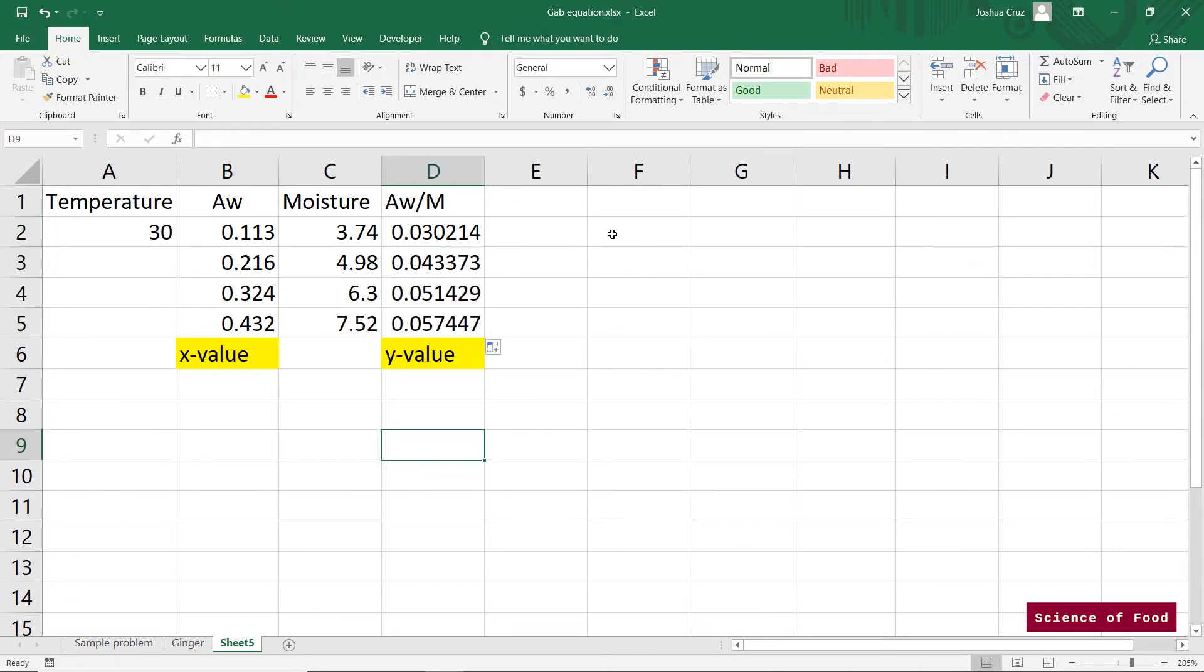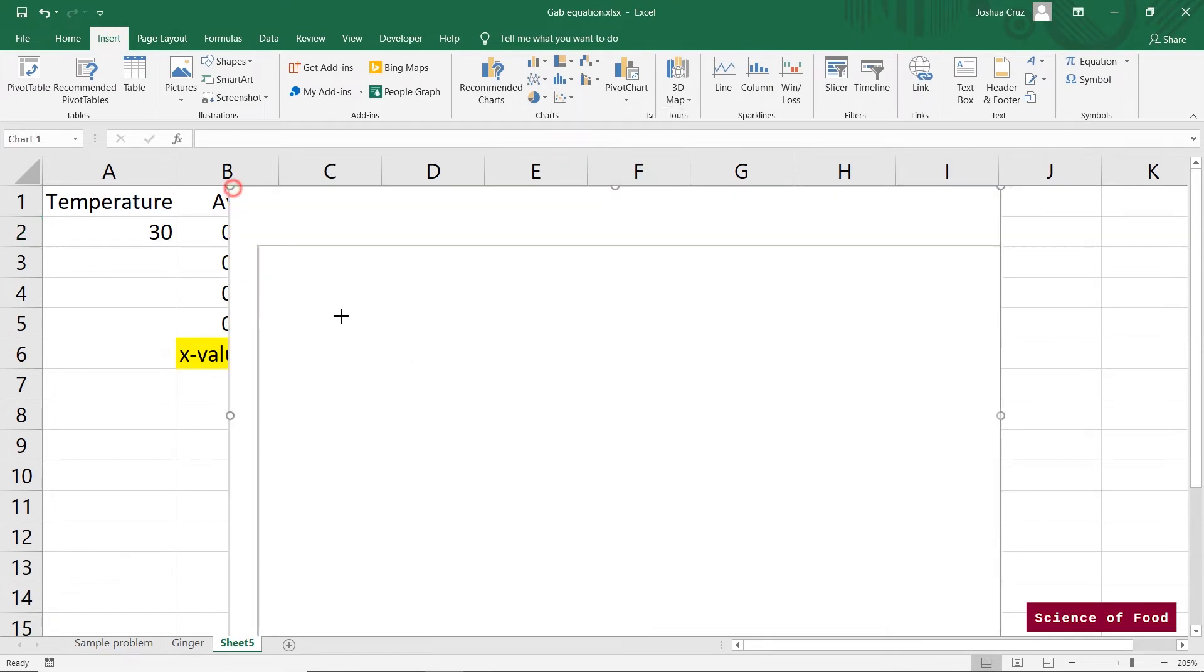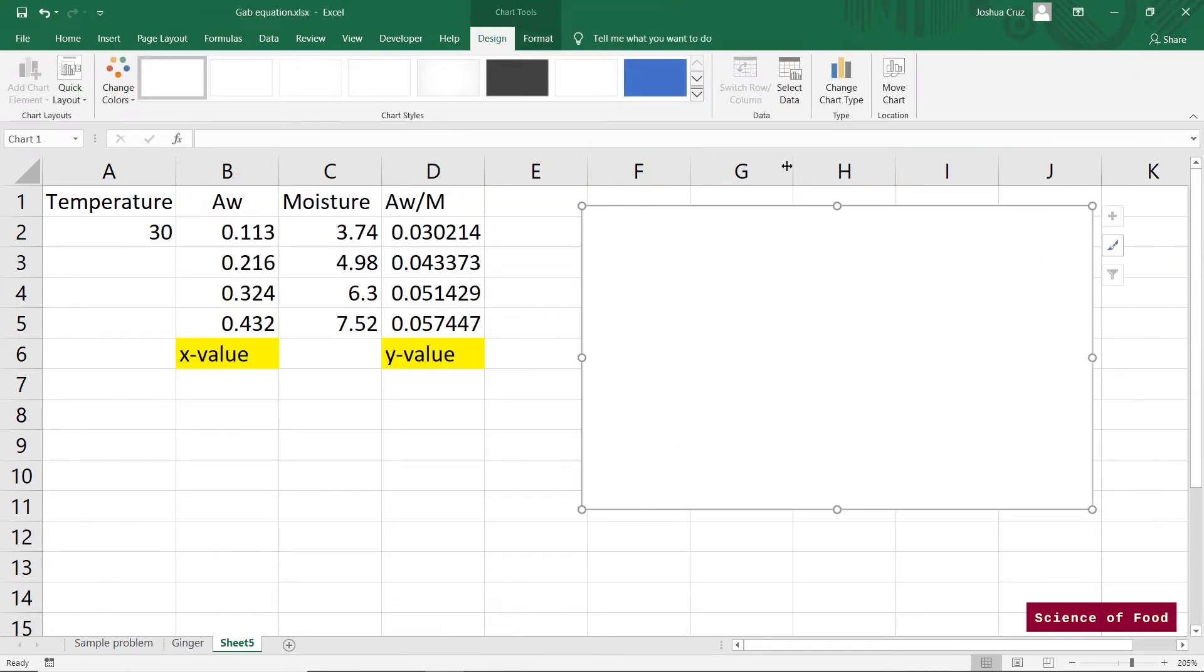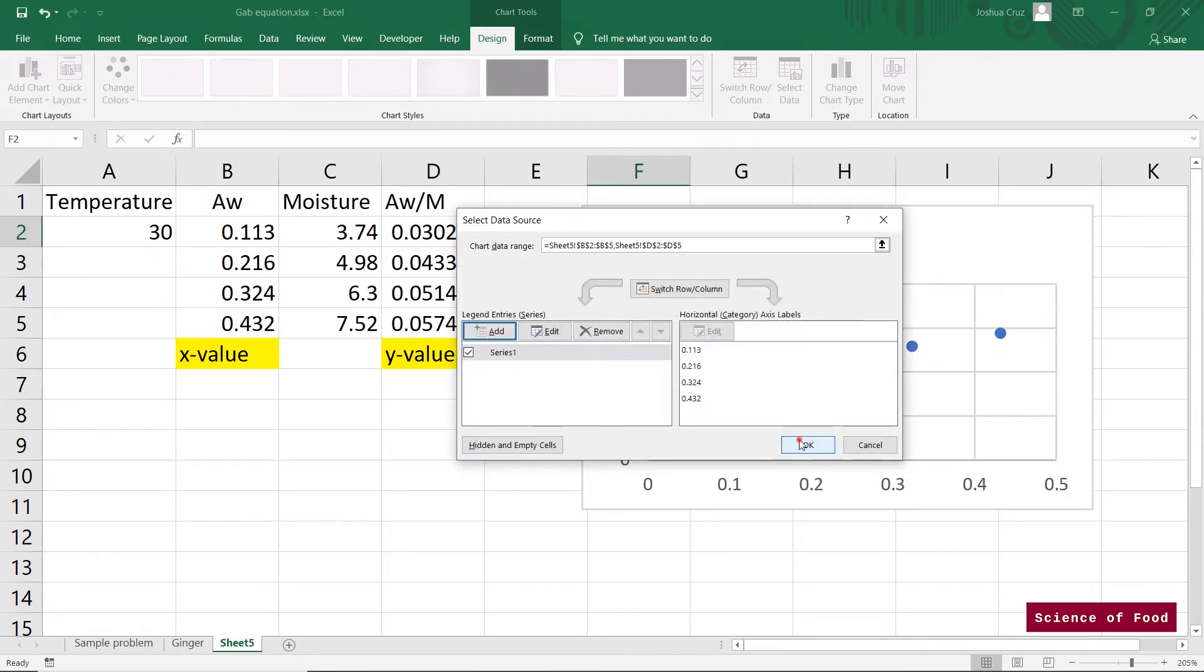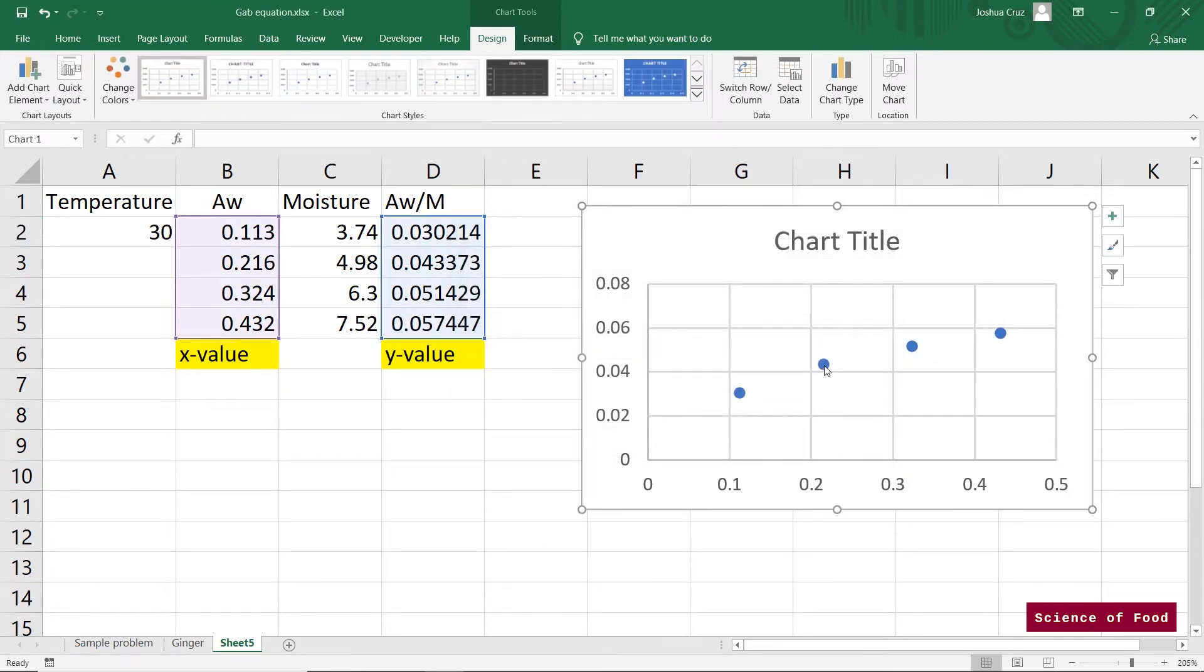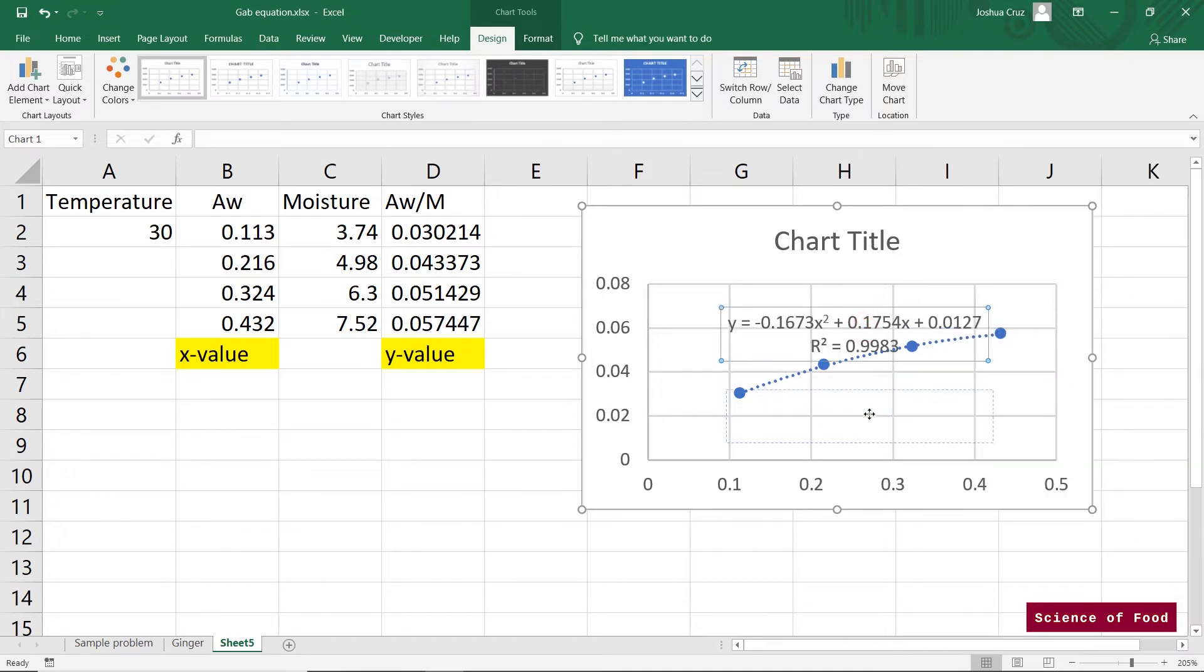So we have our x values and y values. The next thing that I would do is get a scatter plot and select the data that we would need. Again, x values is the water activity and the y values is the ratio. And you have something like this. Next thing we need to do is add a trend line, a polynomial trend line with order 2. We would also like to have the equation of the line displayed as well as the r squared value.